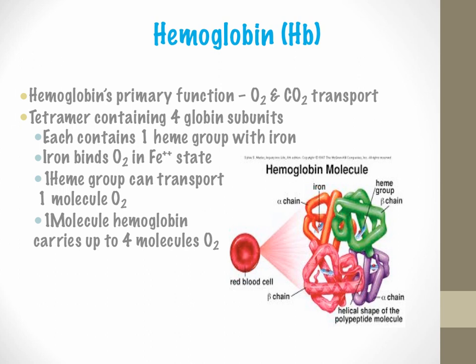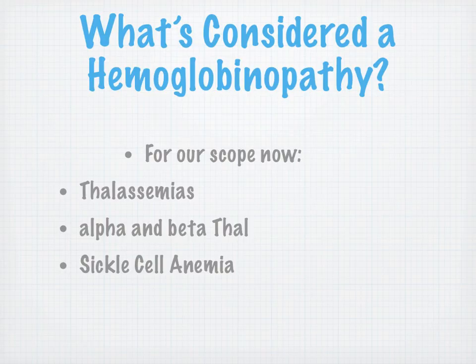Focusing on the hemoglobin slide: hemoglobin's primary function is to carry oxygen and CO2. You can recall the structure from biochemistry — you've got some alpha chains and some beta chains, and you've got the heme group. This slide is just asking you to recall the importance of hemoglobin. So what's considered a hemoglobinopathy? For now, what I'm interested in you knowing is alpha and beta thalassemia and sickle cell anemia.